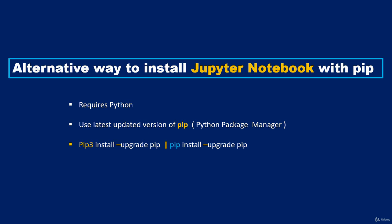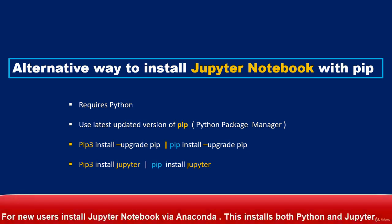To install Jupyter Notebook using pip on a Mac, type 'pip3 install jupyter'. On a Windows-based computer type 'pip install jupyter'. On a Mac you do this in the terminal; on Windows, in the command prompt. For new users it is highly recommended to install Jupyter Notebook via Anaconda, because installing Anaconda will also install Python and Jupyter Notebook together.